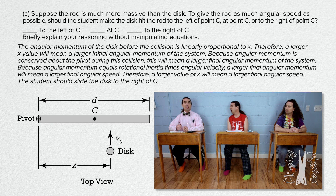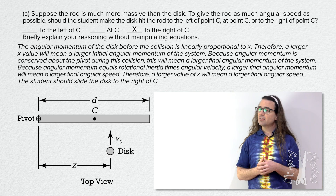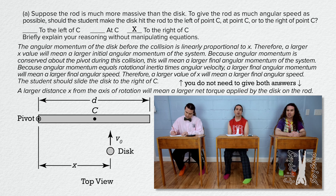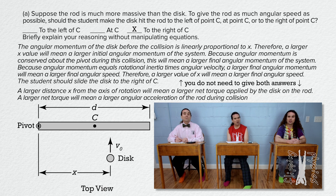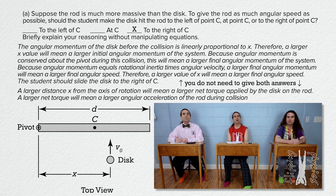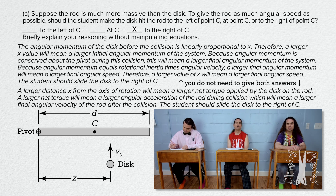We could also do this in terms of torque rather than angular momentum. A larger distance x from the axis of rotation will mean a larger net torque applied by the disk on the rod. A larger net torque will mean a larger angular acceleration of the rod during the collision, which will mean a larger final angular velocity of the rod after the collision. So again, the student should slide the disk to the right of C.